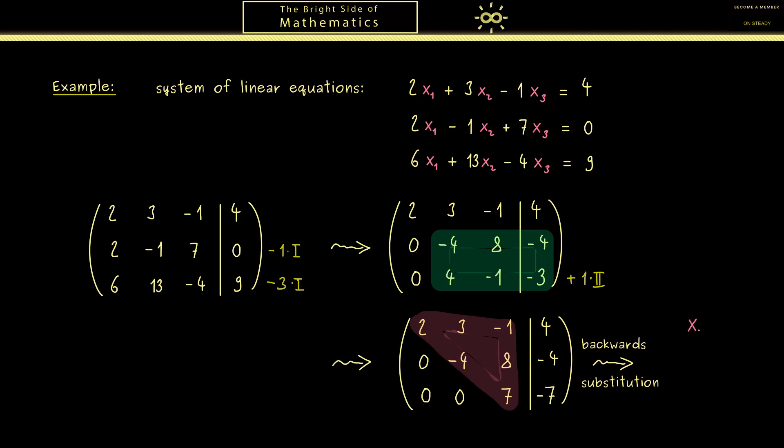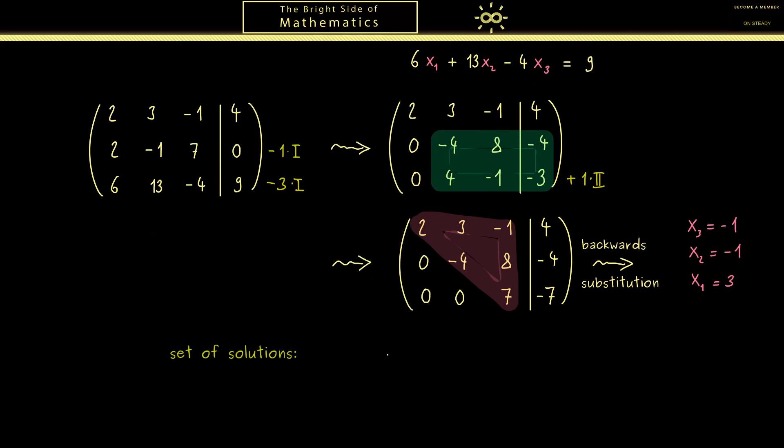So I'll just show you the solution steps here. So first, we get that x3 is minus 1. And then we get that x2 is also minus 1. And finally, then it turns out, that x1 is equal to 3. So you see, this whole thing was a nice example. Because we got out a unique solution of the whole system. Hence, the set of solutions is just a set with one element. And this is the element given as the vector 3 minus 1 minus 1. So it's important, after the backwards substitution, to write the element in the correct order again.